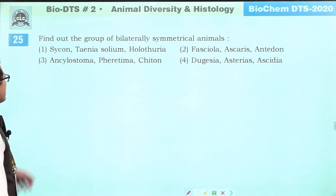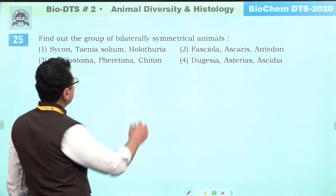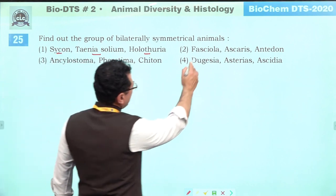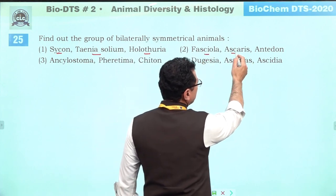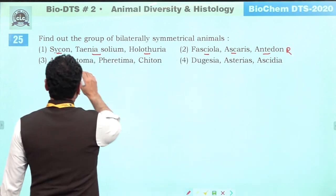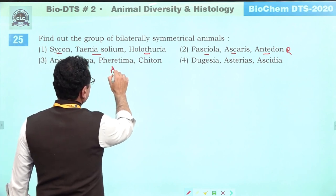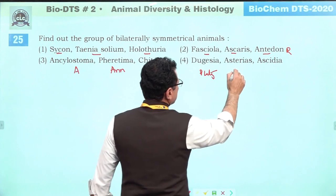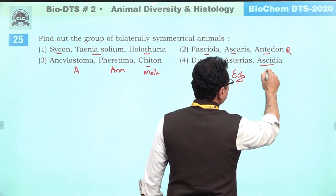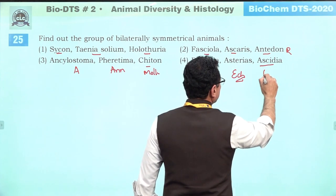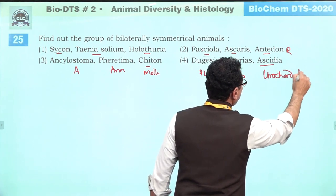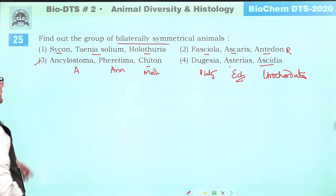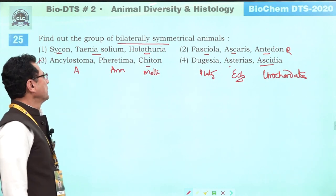Bilaterally symmetrical animals: Sycon is asymmetrical, Holothuria is radial, echinoderms are radial or asymmetrical. Fasciola hepatica (Platyhelminthes) is bilaterally symmetrical. Ascaris is bilaterally symmetrical. Ancylostoma (Aschelminthes) is bilateral. Ferritima (Annelida) is bilateral. Chiton (Mollusca) is bilateral. Asterias (Echinoderm) is radial. So the correct answer is three: Ancylostoma, Ferritima, and Chiton.